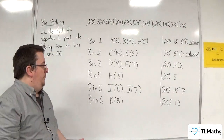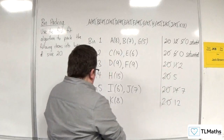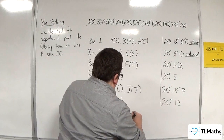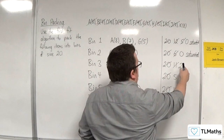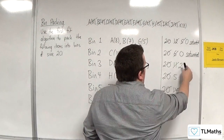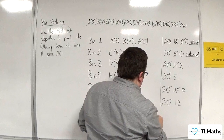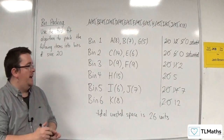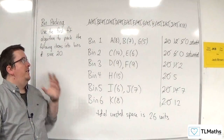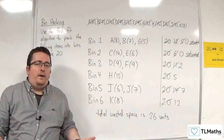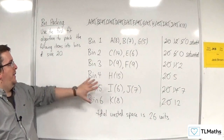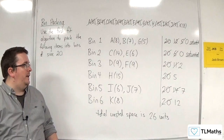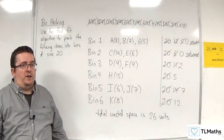So, wasted space — the total amount of wasted space is two plus five plus seven plus 12, which gives us 26 units. Not very good. The question then is: can I improve upon this? Is there a way of reducing that total wasted space and potentially reducing the number of bins I'm using?